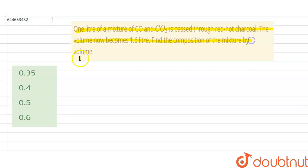So we have to find the composition of mixture by liter of volume. Let the volume of CO2 be equal to x liter, and the volume of CO will be 1 minus x liter.